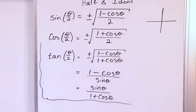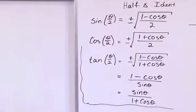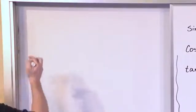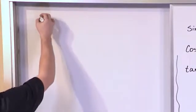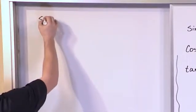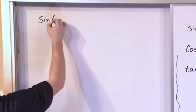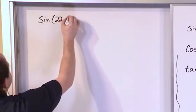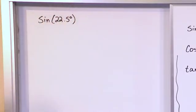So let's get a little bit of practice with these half angle identities. Let's express sine of 22.5 degrees as an exact number.